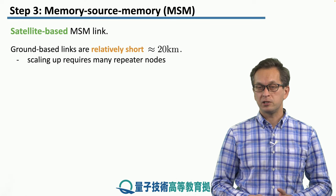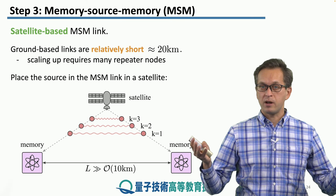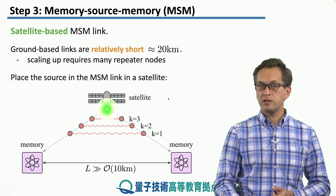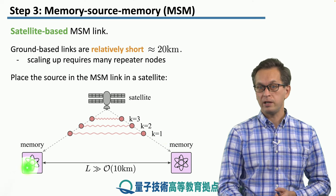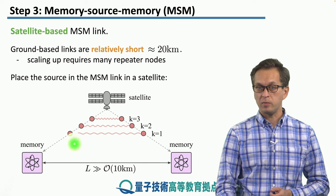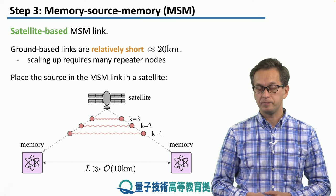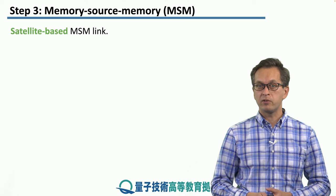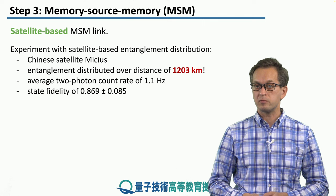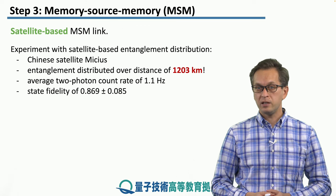Ground-based links are relatively short — they have to repeat every 20 kilometers or so, simply due to attenuation in the fiber, so scaling to long distances requires very many repeater nodes. On the other hand, if we put the source into a satellite, it can produce photons and send them to ground stations, and because of the satellite's position above ground, the distance between the two receiving stations increases by many orders of magnitude. In fact, such an experiment was performed relatively recently by a Chinese satellite, Micius. Entanglement was distributed over a total distance of 1,200 kilometers, and the average two-photon count rate was 1.1 Hertz, with an achieved fidelity of just shy of 0.87.